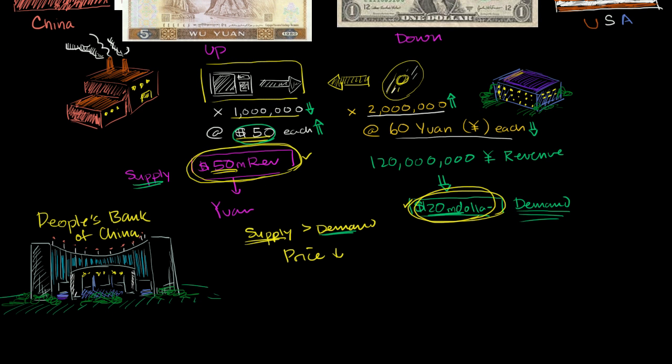And the way that they create demand for $30 million at that exchange rate is that they can literally print, create 180 million yuan. And then at an exchange rate of 6 to 1,